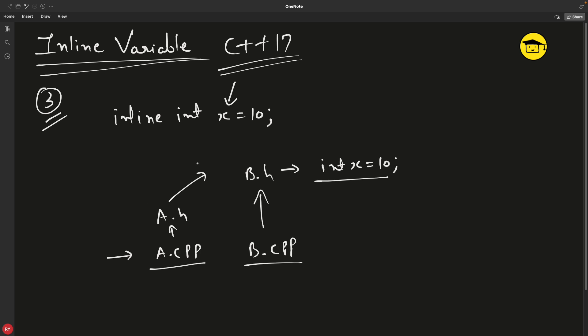So now this is the solution. As I told you that it will be treated as single throughout all the compilation units. If you put inline here, just before int, inline int x is equal to 10. And if this hierarchy is same, then it will compile, it won't give any error. So this is the first use case.